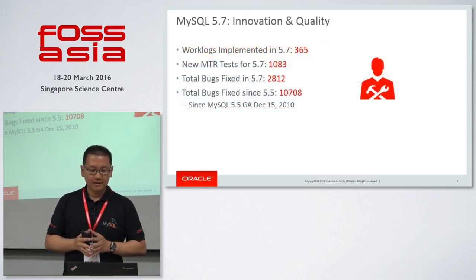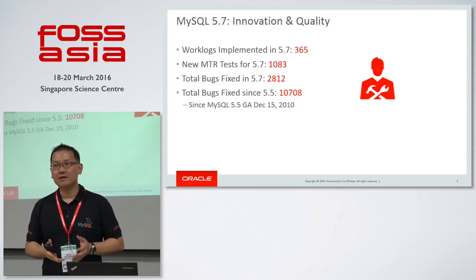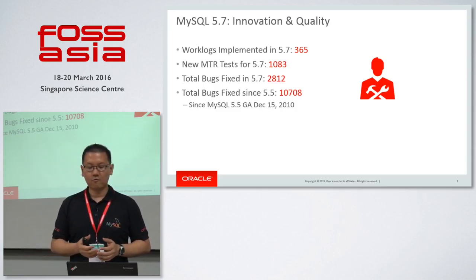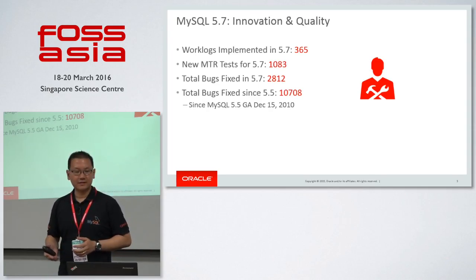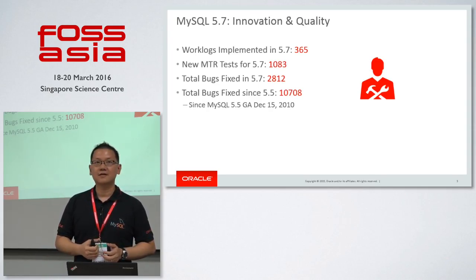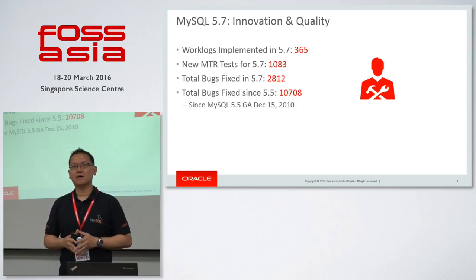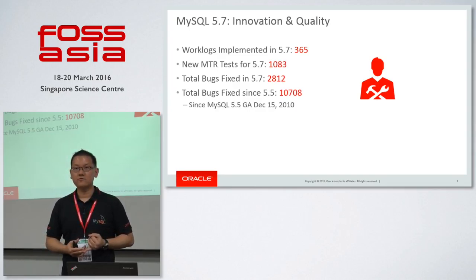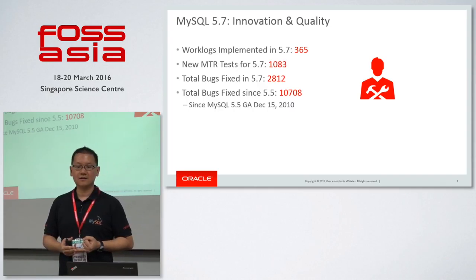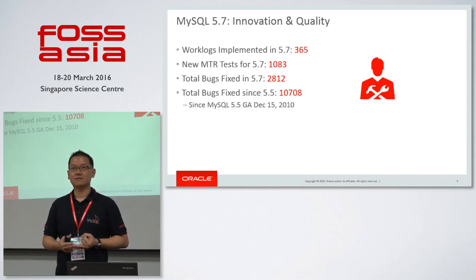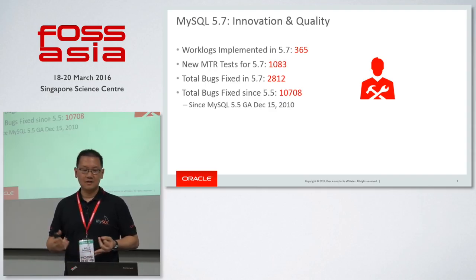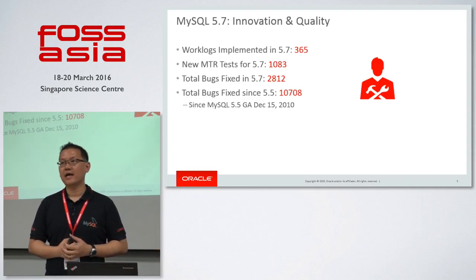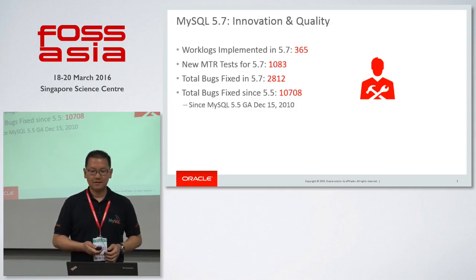In MySQL 5.7, we did a lot of work. We have a lot of work logs implemented, MTR tests, and about 2,800 bugs fixed. This is all thanks to our open source community contribution as well — they reviewed, helped test the beta and alpha releases, so we could come up GA on time.